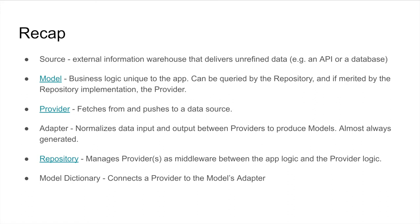The provider is the thing that fetches to and from — the intermediate layer between Dart and the data source. The adapter converts raw inputs: given a JSON payload or a Firestore document, the adapter outputs a Dart model. This is generated by Brick, so you just run a build runner build command and it's made for you. The repository is the middleware; there's some configuration required — defining a base API endpoint or providing Firebase credentials — but very little beyond that. Your repository handles all the logic of fetching when and where.